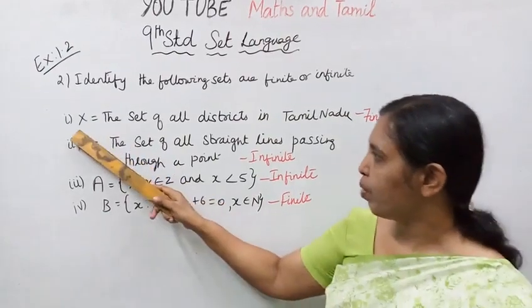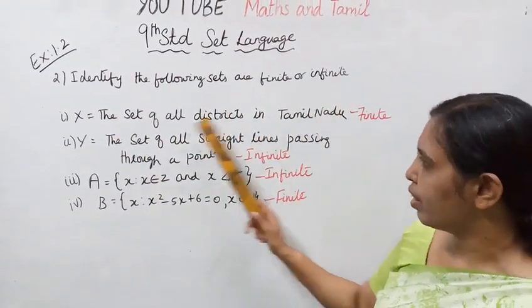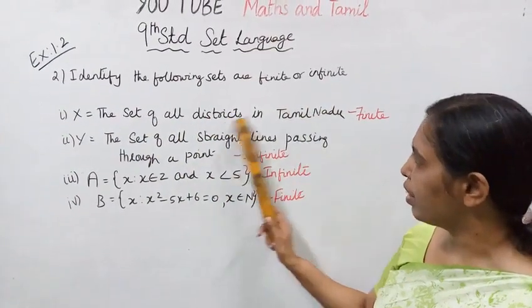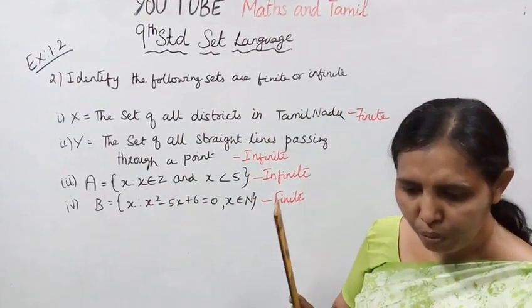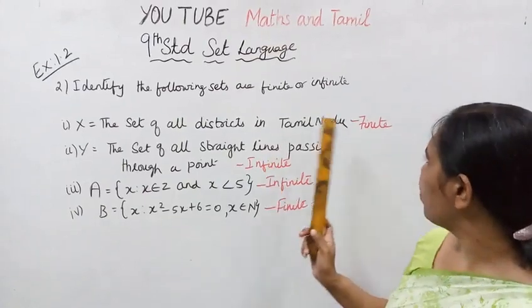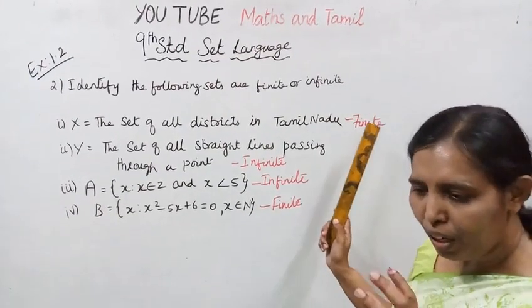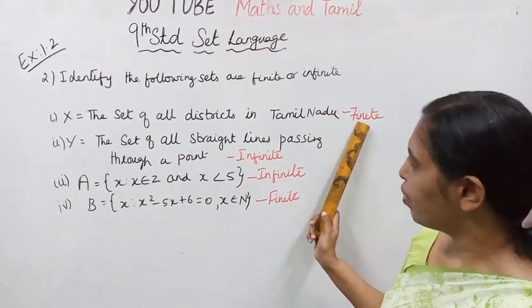First question: X = the set of all districts in Tamil Nadu. The districts in Tamil Nadu can be counted, so the answer is finite.